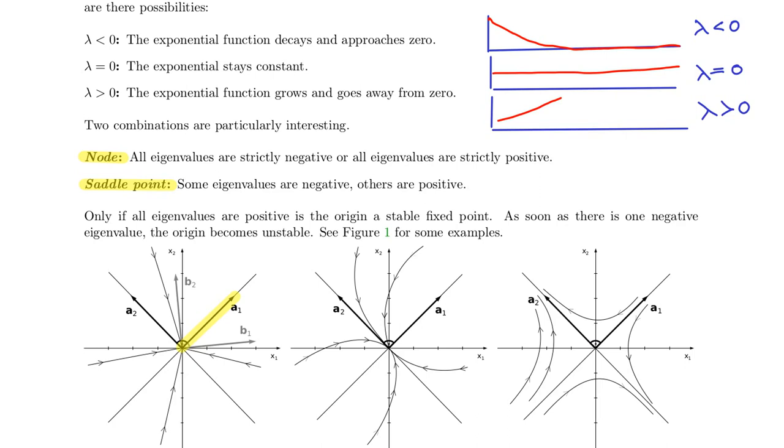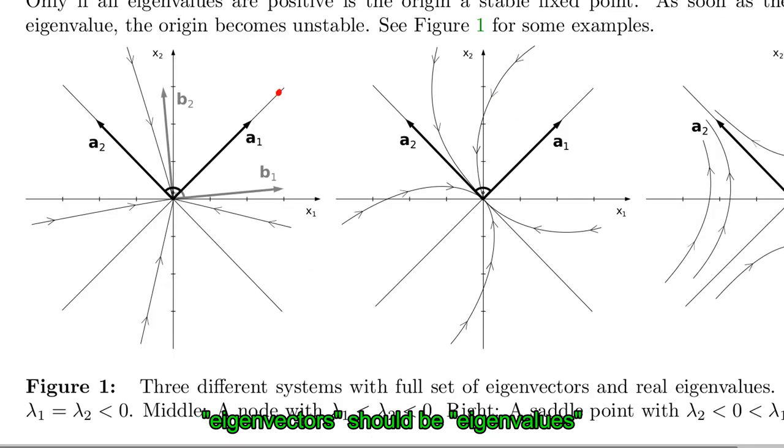So here in the left graph, we assume that all eigenvectors are negative, so we would have a decay along the eigenvector. So if we start somewhere here, the solution would just move towards the origin, get closer and closer to it. And I have drawn the points closer and closer because it is an exponential decay, so it slows down as it approaches the origin. The same is true along the other direction. And here I actually assume that the eigenvalues lambda 1 and lambda 2 are both equal. And that means that any rotated version of A1 and A2 also forms a set of eigenvectors and the decay rate in all directions is the same. And that is the reason why no matter where you come from, you always have the same decay process. So that is a very symmetric situation.